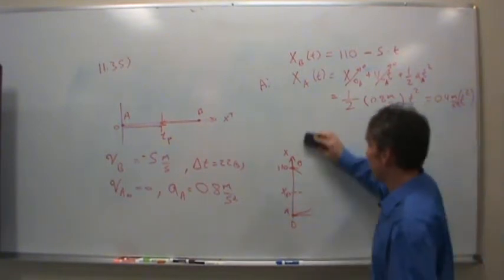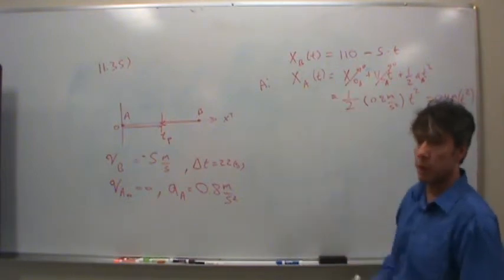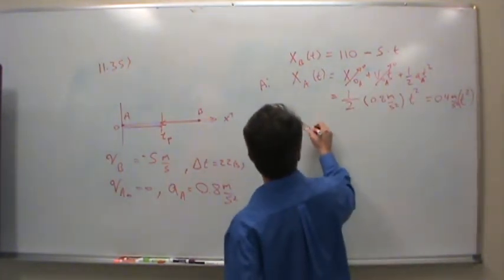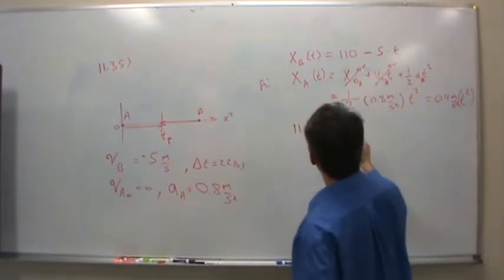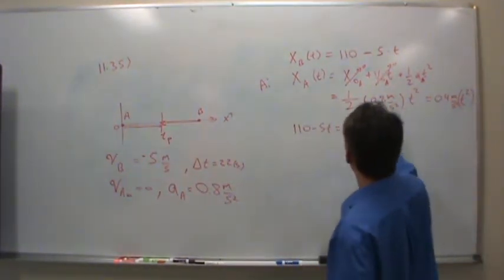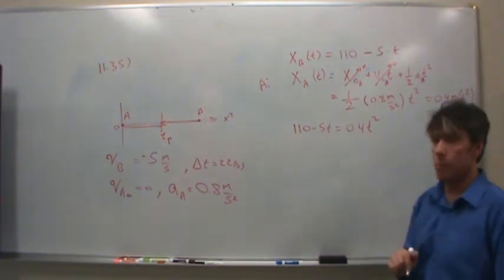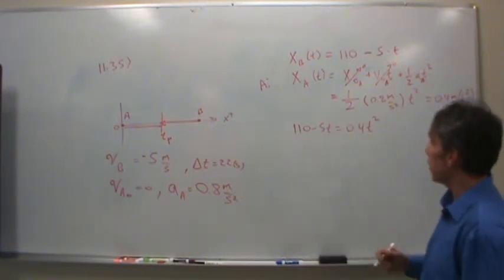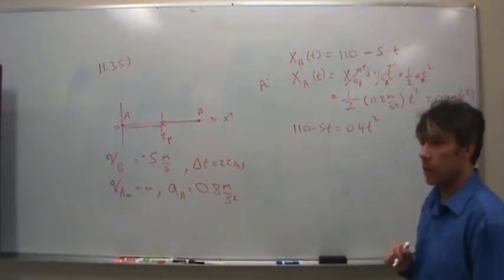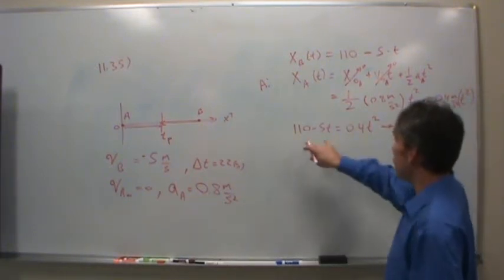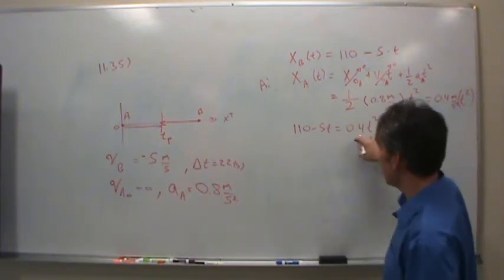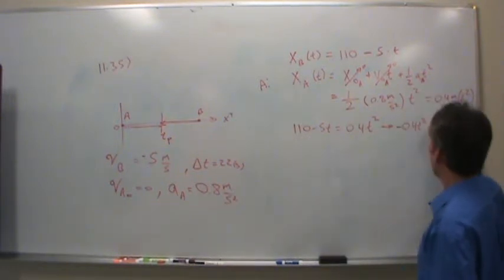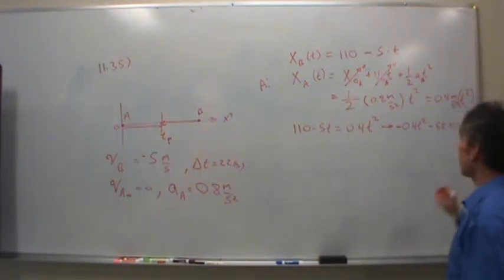I think we can safely erase this graph. Remember, our goal was to set the two position equations equal to each other. So let's set the two equal to each other. 110 less 5T for the position of B is equal to 0.4 T squared. All I need to do is solve for T. This is a quadratic equation. So I can use the quadratic formula to solve for T. Now can I use the equation in its current form? No, I'm going to take it to standard form. So what I really need to do is move this to the left side. It doesn't matter which way you do it, it will come out the same. So negative 0.4 T squared less 5T plus 110 equals zero.